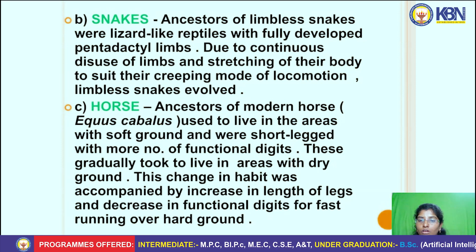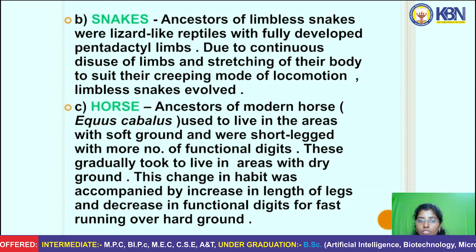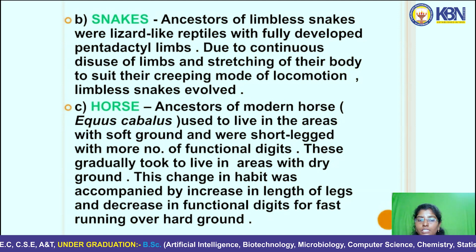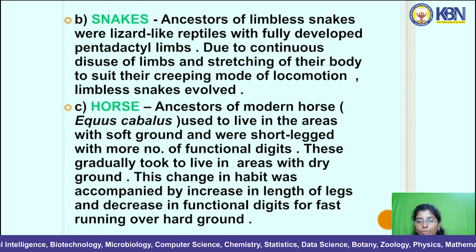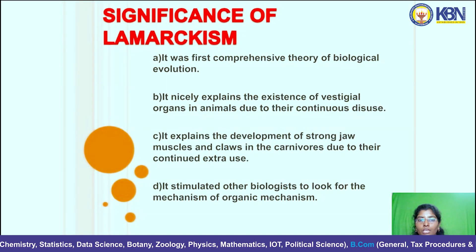Regarding horses: ancestors of the modern horse used to live in areas with soft ground and were short-legged with more functional digits. They gradually moved to areas with dry ground. This change in habitat was accompanied by increasing leg length and a decrease in functional digits for fast running over hard ground.